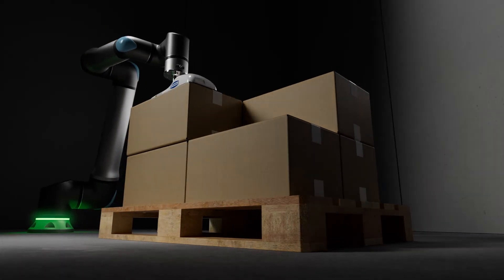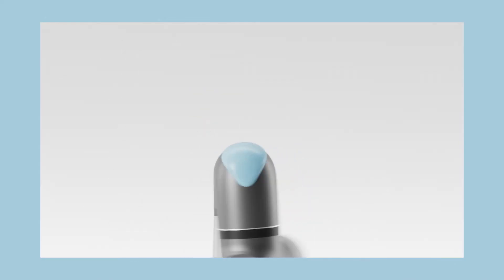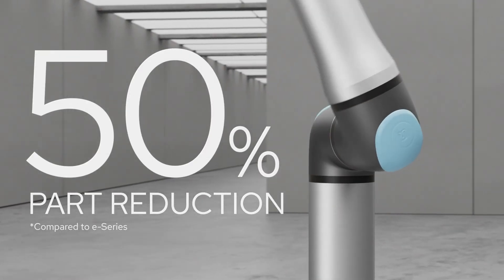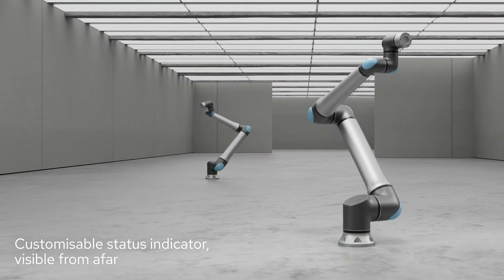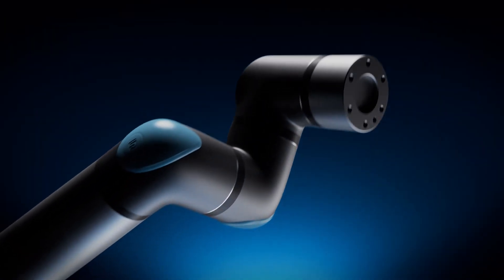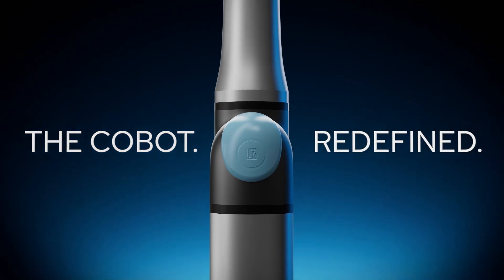Reduced joint complexity improves performance with fewer parts to cut down service requests and downtime. This is the future of industrial automation. This is the cobot redefined from Universal Robots.